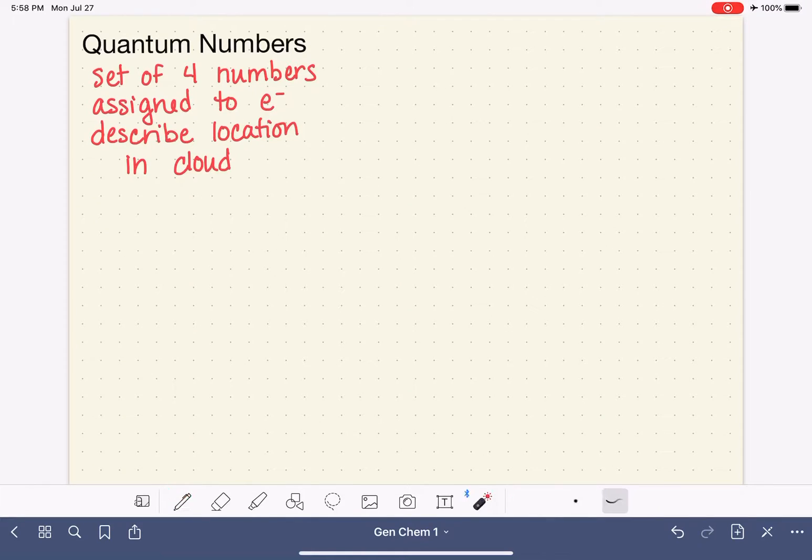I'm going to do a separate video for each one of the four quantum numbers. In this video, we're going to be talking about the principal quantum number. So this is just one of the four. We'll call this number one, the principal quantum number.